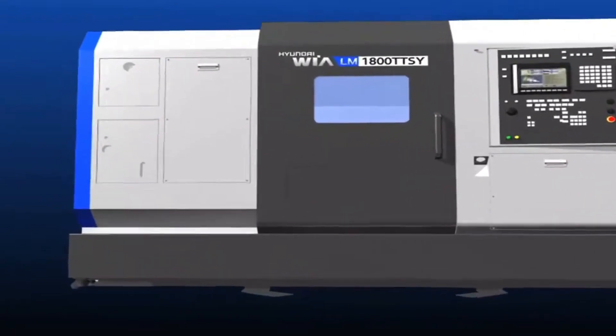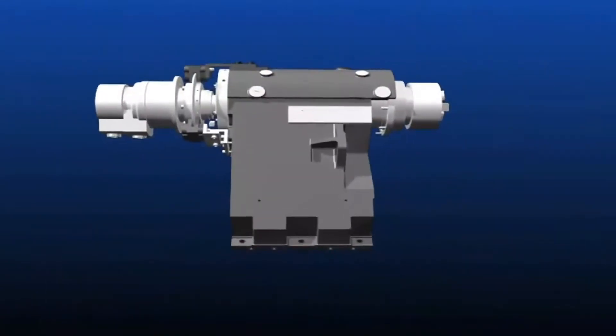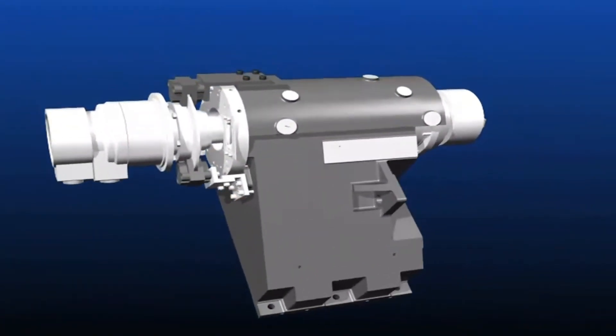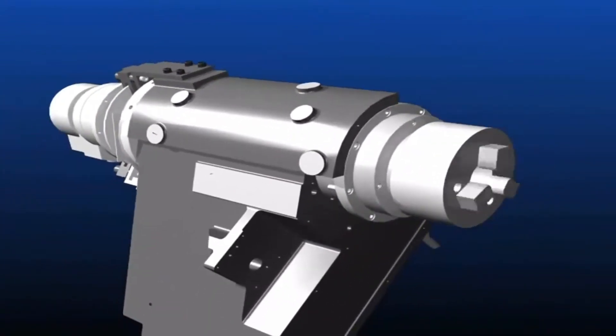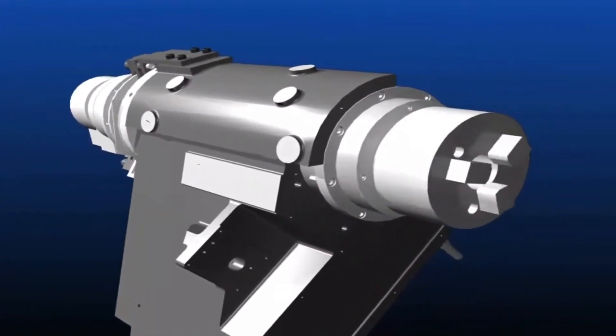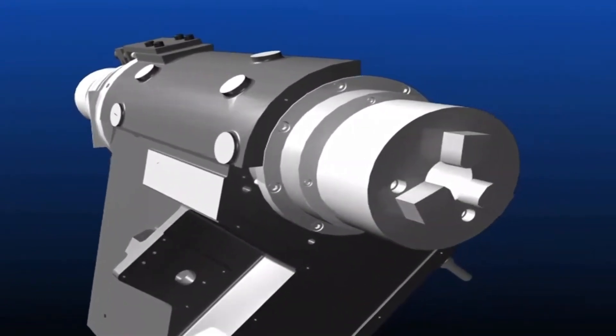Built-in main spindle reduces noise and vibration even at high speed or when taking heavy-duty cuts, improving precision and surface finish. The spindle is also capable of rapid acceleration and deceleration, reducing non-cutting time.